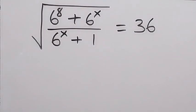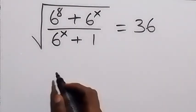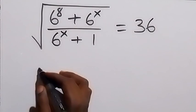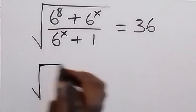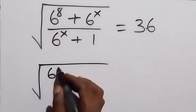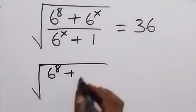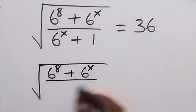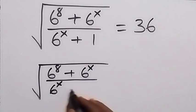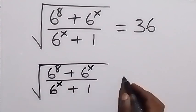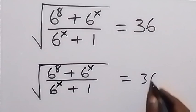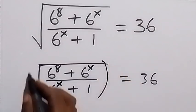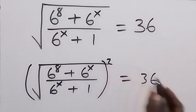Hello, you are welcome. How to solve this nice algebra problem — here we are finding the value of x. Let's square both sides. We have square root of 6 raised to power 8 plus 6 raised to power x, over 6 raised to power x plus 1, equals 36. Now from here we square both sides.